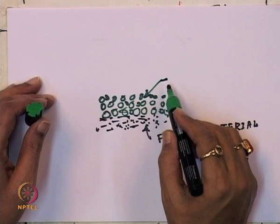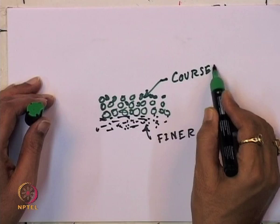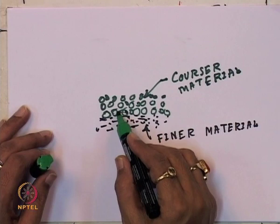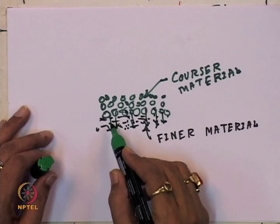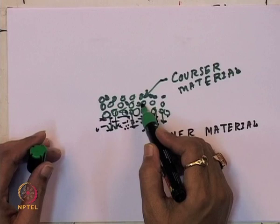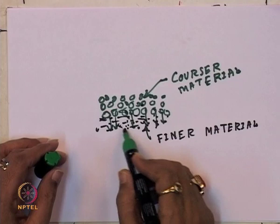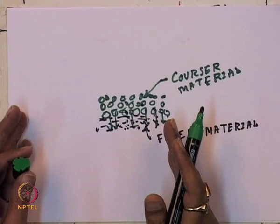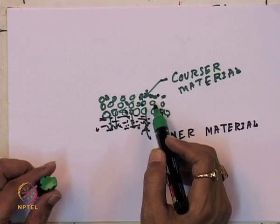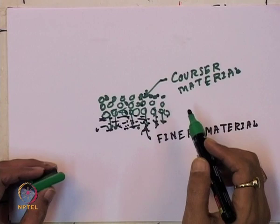If you take 20 kg of aggregate and place it on 20 kg of mud, you can end up with 40 kg of mud — the coarser material gets lost into the finer material. There is a mixing of finer and coarser material and the coarser aggregate is wasted.